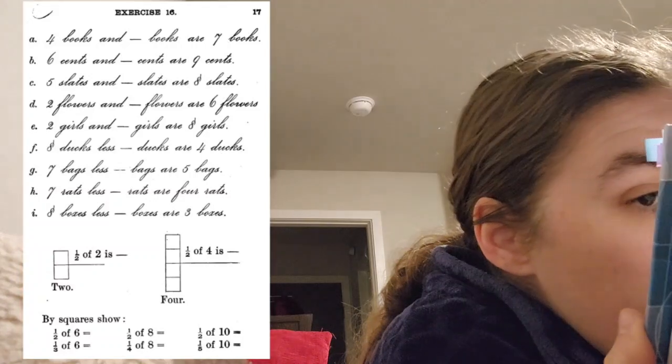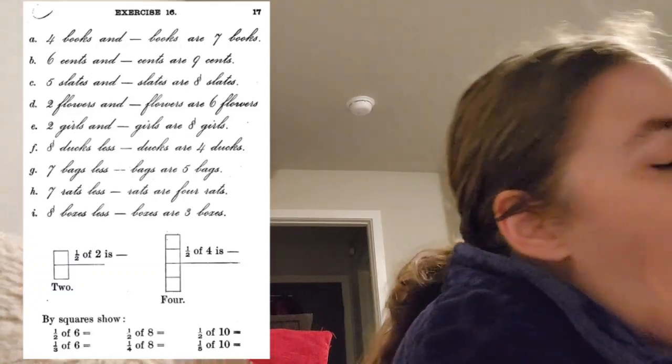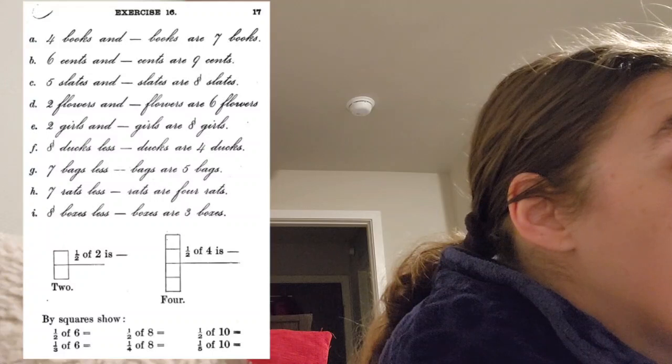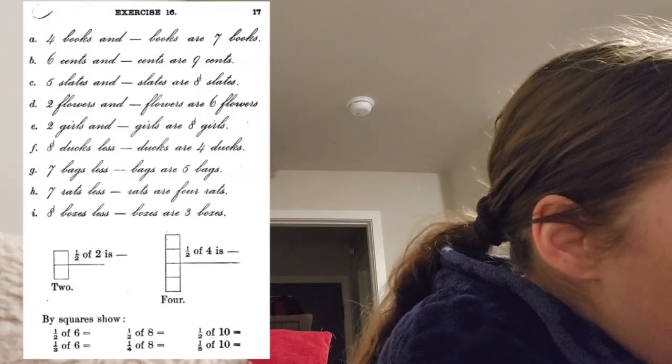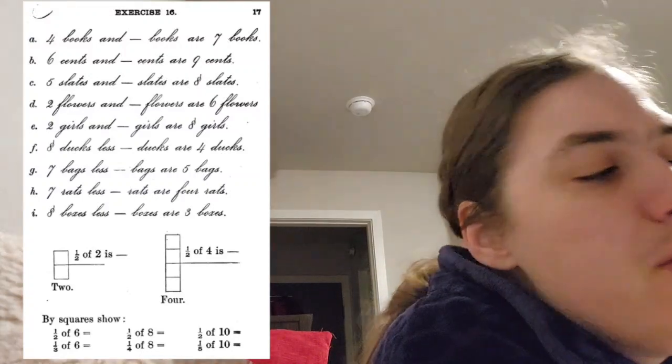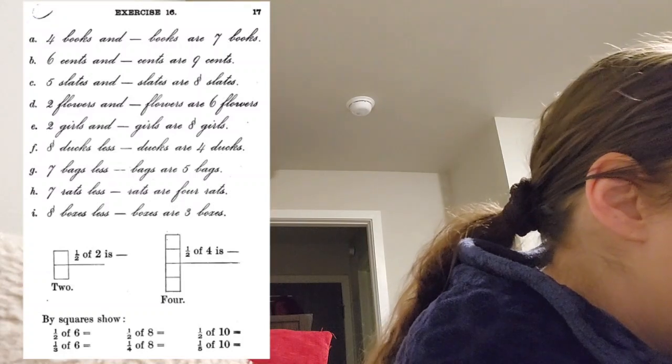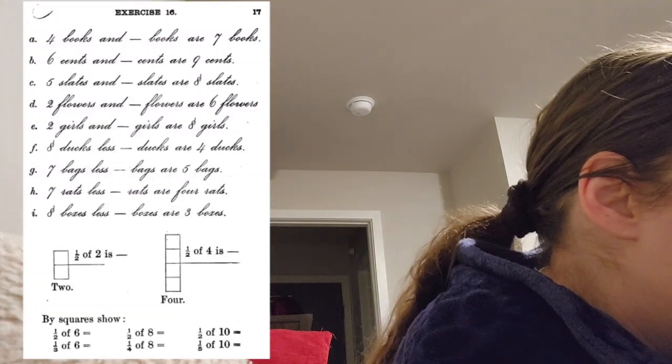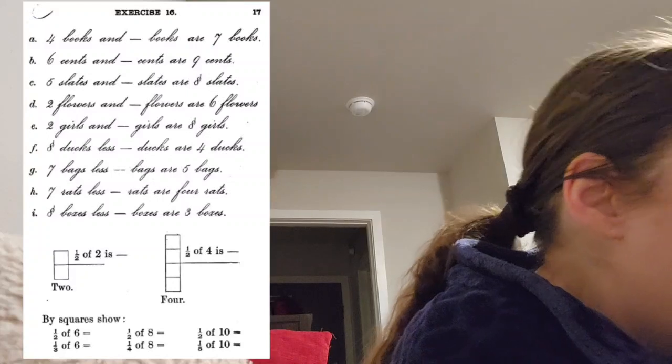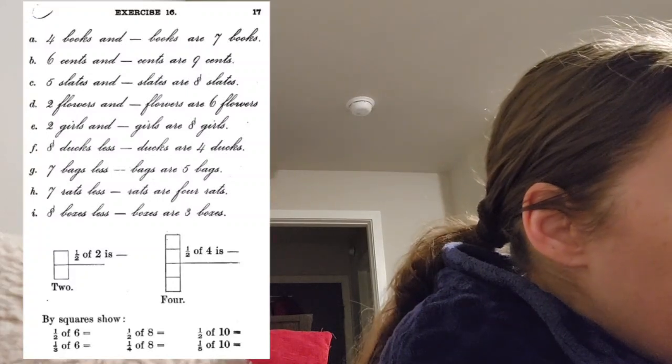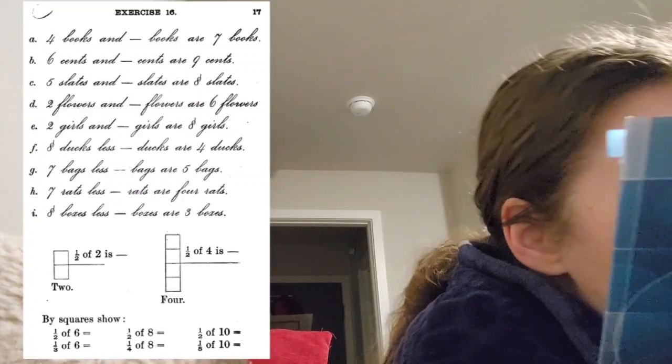Four books and blank books are seven books. Four books and three books are seven books. Six cents and blank cents are nine cents. Six cents and three cents are nine cents. Five slates and blank slates are eight slates. Five slates and three slates are eight slates.